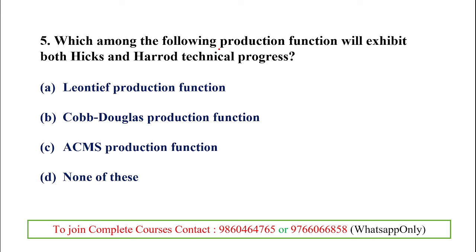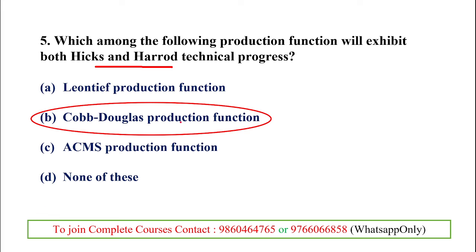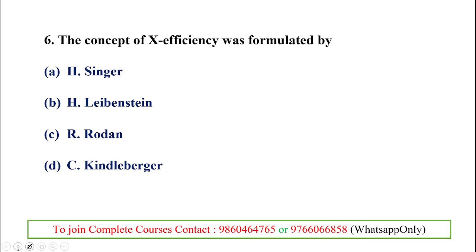Question 5: Which of the following production functions will exhibit both Hicks and Harrod neutral technical progress? Options are Leontief, Cobb-Douglas, CES (ACMS), or none of these. The answer is the Cobb-Douglas production function, which exhibits both Hicks and Harrod neutral technical progress.